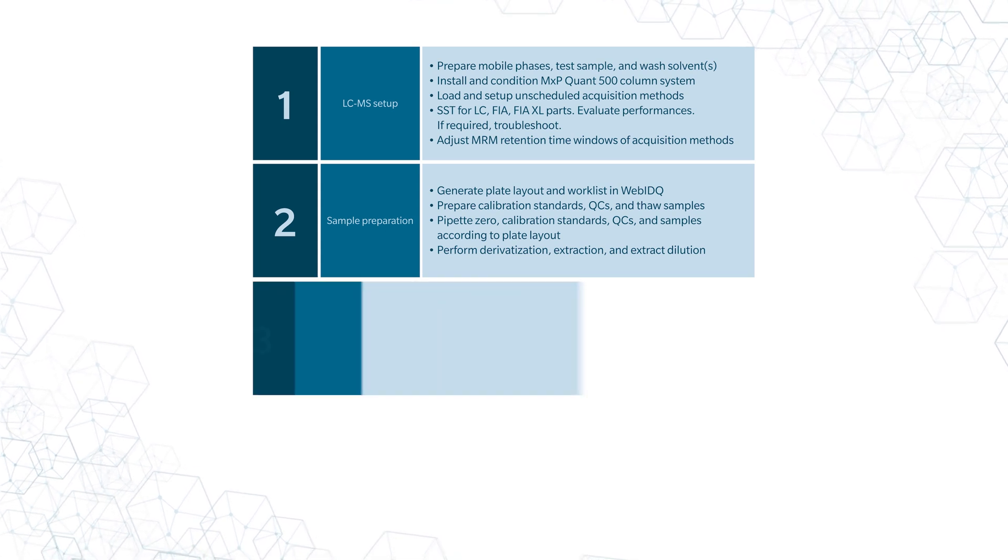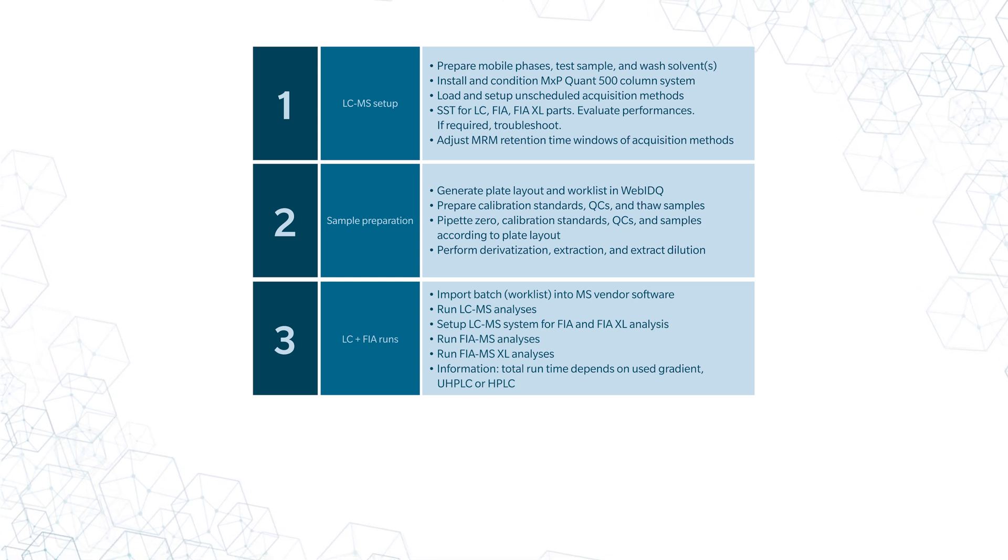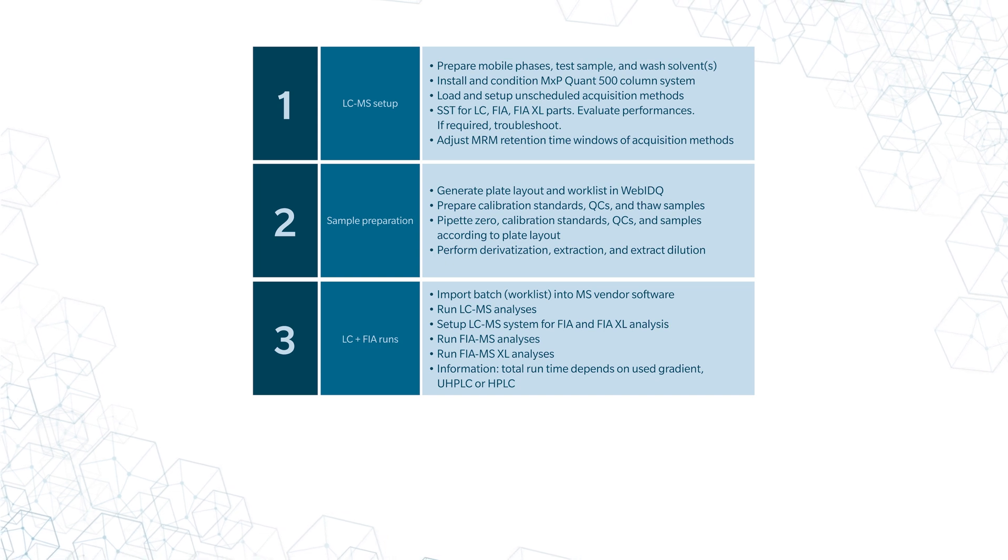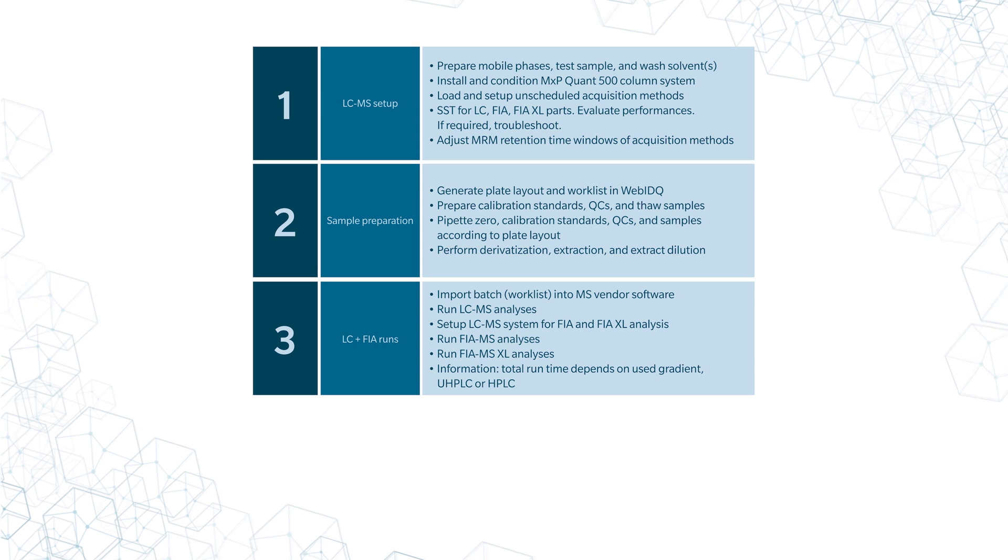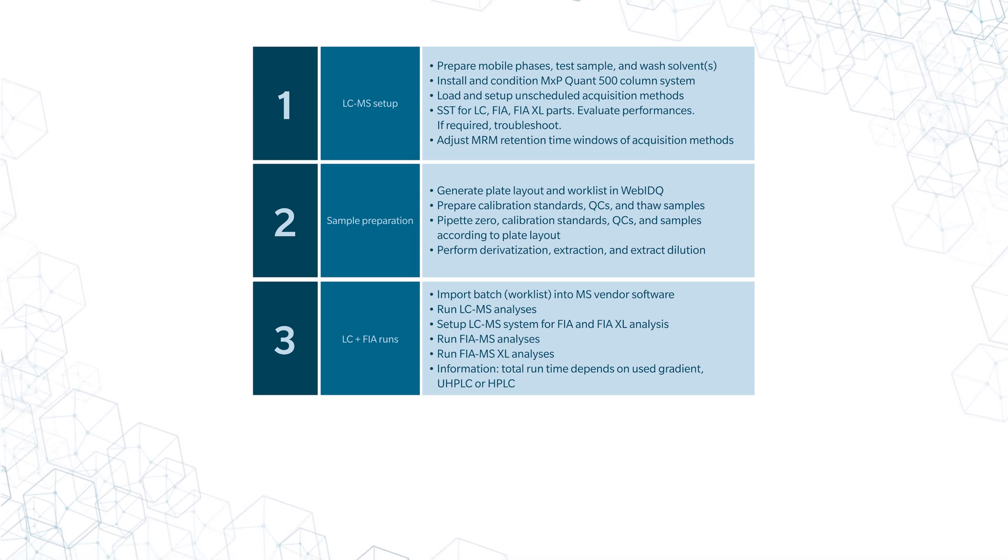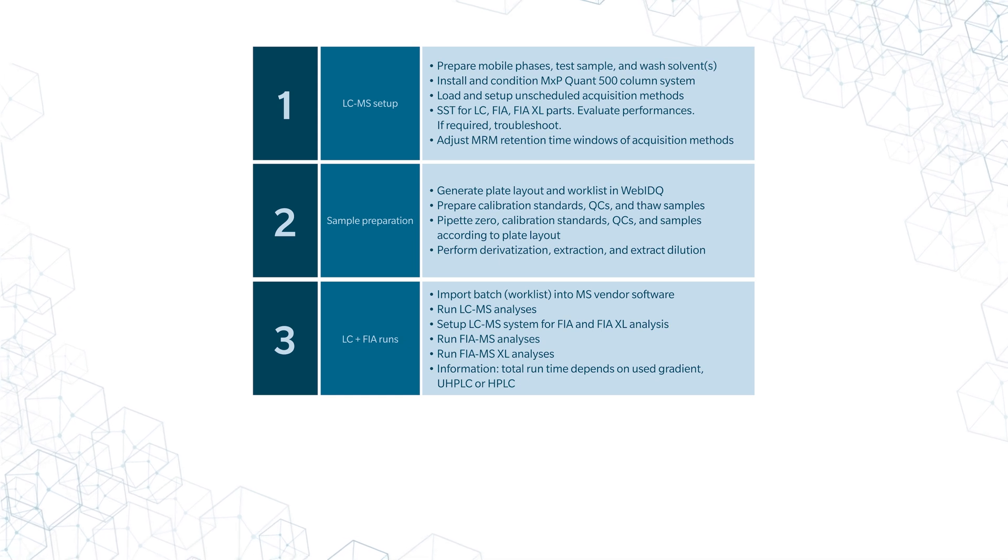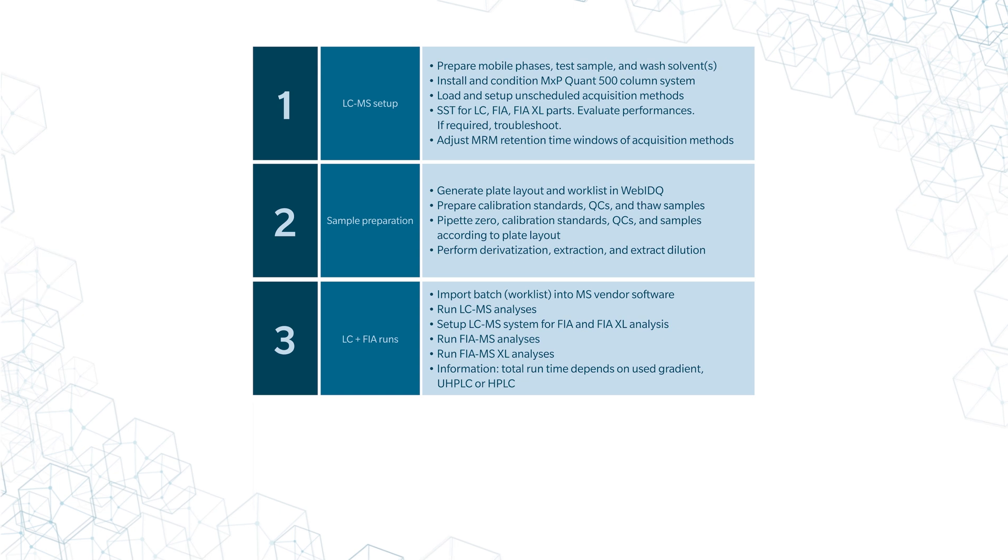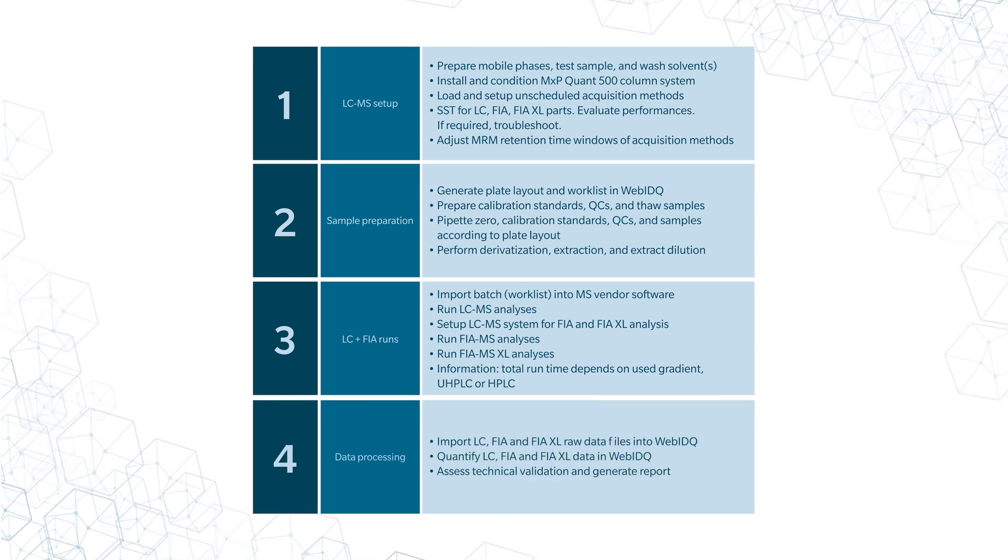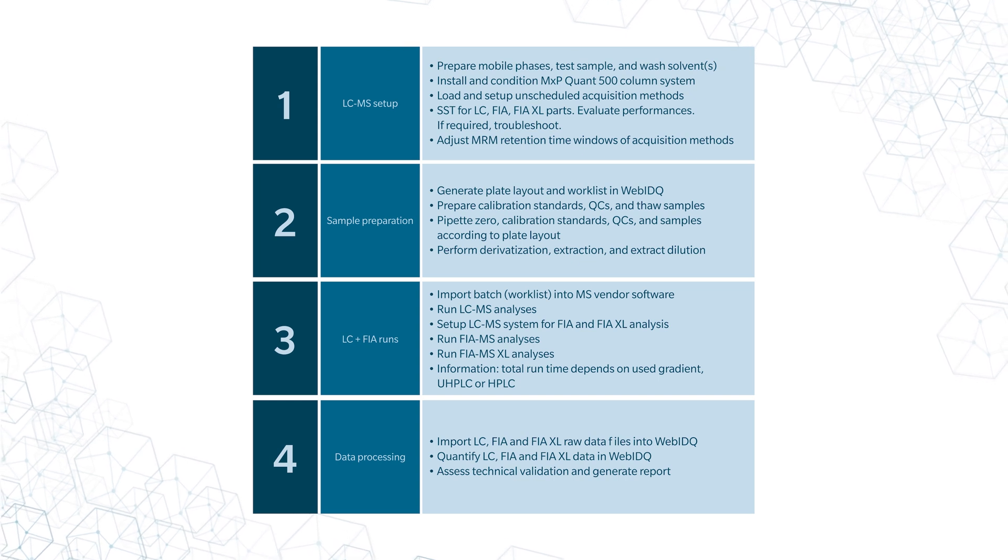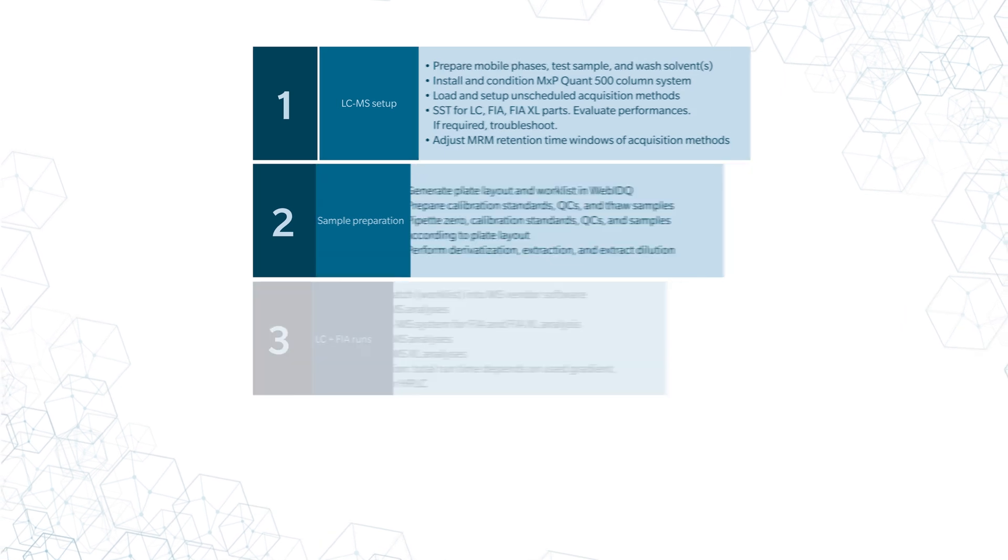To start the LC-MS analysis, first import your worklist into the MS Vendor software as a sample list or batch file. Run the LC part of the kit first, check the performance, and then set up the LC-MS system for the FIA and FIA-XL analysis. Run both the FIA and FIA-XL parts of the kit and check the performance before proceeding. Quantify all the LC, FIA, and FIA-XL data by importing the raw data files directly into WebIDQ. Assess the technical validation, and then finally generate a report of all the results.